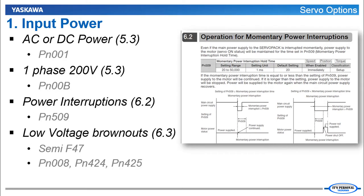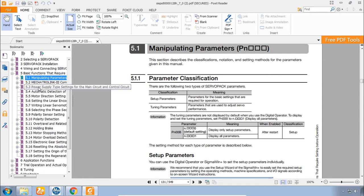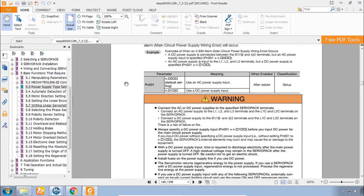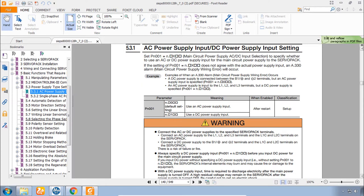In the first topic is Input Power. Input Power to the Amplifier. AC or DC? Single phase or three phase? What about power interruptions or brown notes? Well, choosing between AC and DC is in Section 5.3. Pretty straightforward. You have a parameter for either AC or DC. By default, in most cases we're assuming that you'll use AC.